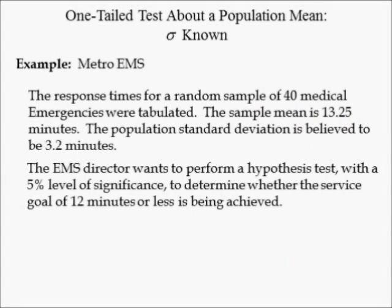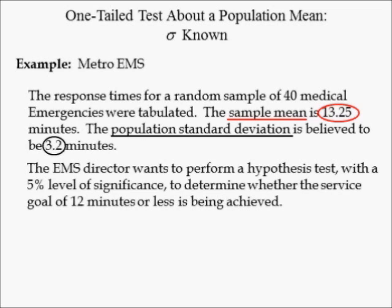Recall our example which used Metro EMS. The response time for a random sample of 40 medical emergencies were tabulated. The sample mean was 13.25. The population standard deviation is believed to be 3.2 minutes. The EMS director wants to perform a hypothesis test with a 5% level of significance to determine whether the service goal of 12 minutes or less is being achieved.